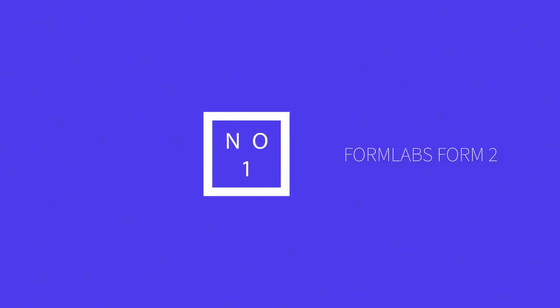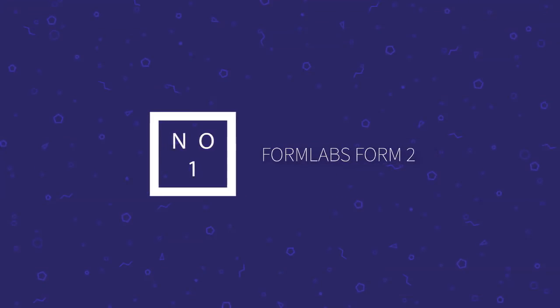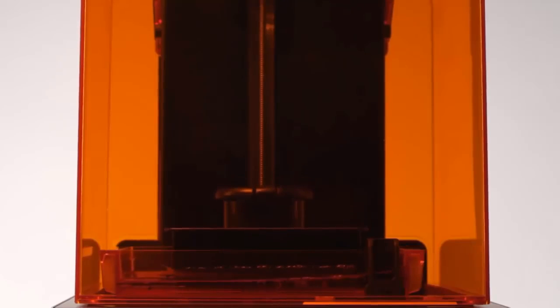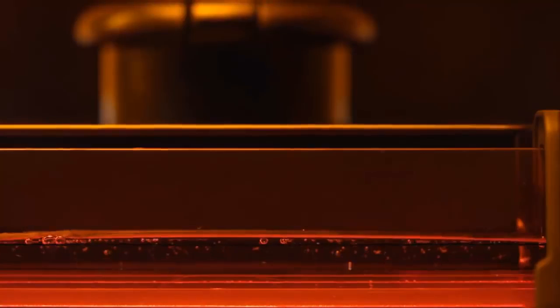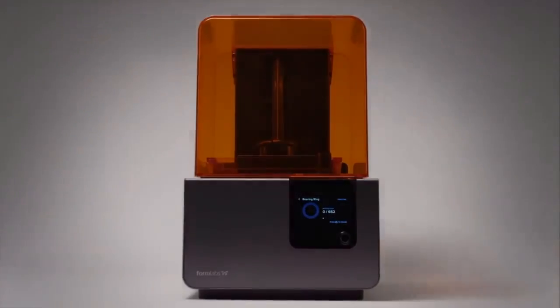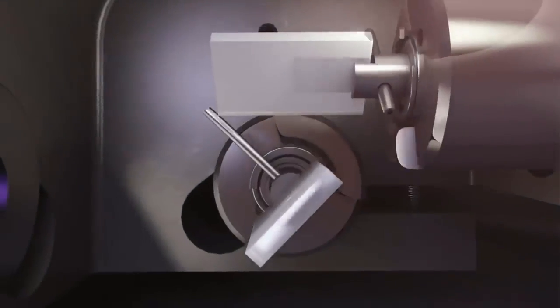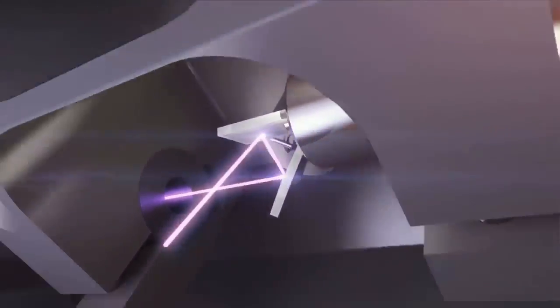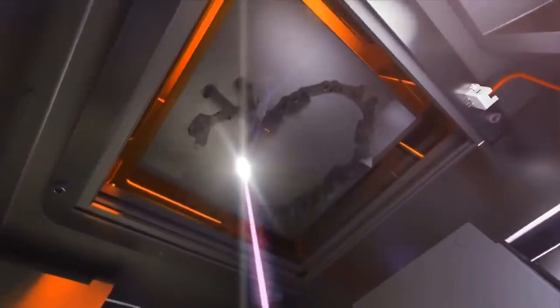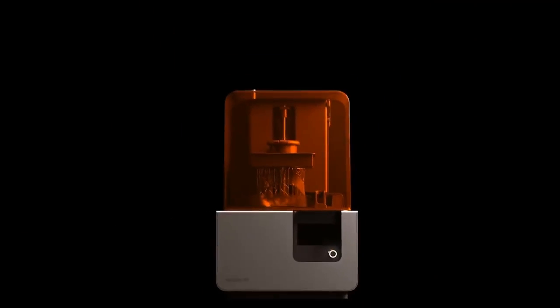The Form 2 delivers high-resolution parts at a fraction of the cost and footprint of industrial 3D printers. It allows you to scale your prototyping and production in-house with desktop stereolithography. The Form 2 is an SLA printer, which means it prints by firing an ultraviolet laser into a thin layer of liquid resin between the print head and the bottom of the print tray. Once hit by the UV light, the resin solidifies.